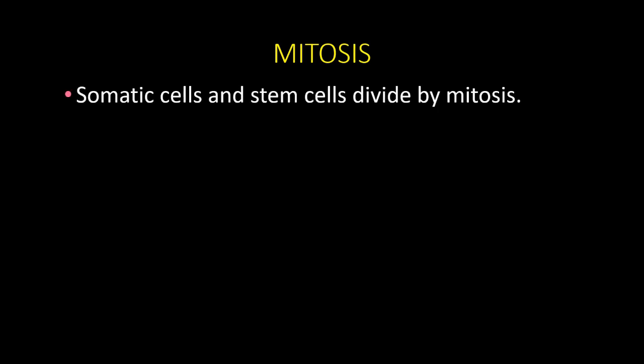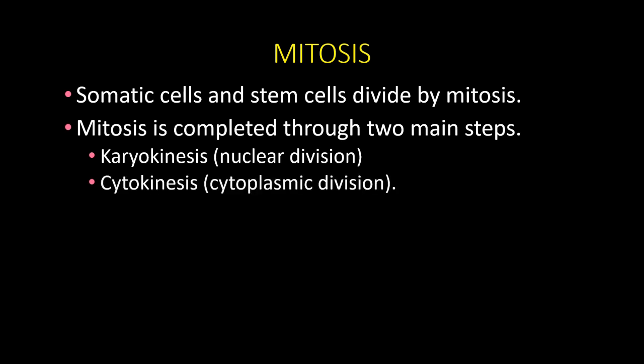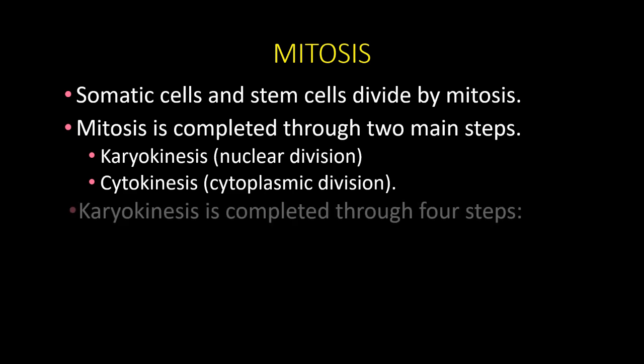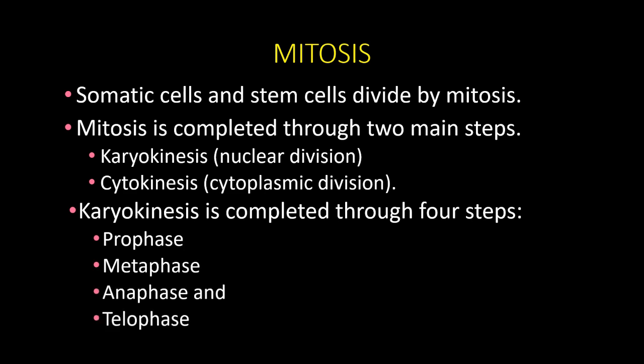The somatic cells — that is the body cells and stem cells — divide by mitosis. Mitosis is completed through two main steps: one is karyokinesis, that is the nuclear division, where the nucleus is the first to get divided; and then cytokinesis, where the cytoplasm divides. Karyokinesis is completed via four steps: prophase, metaphase, anaphase, and telophase.